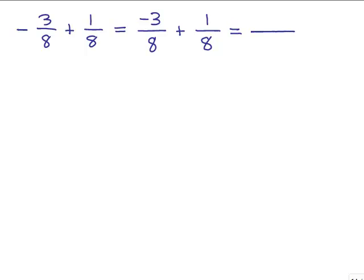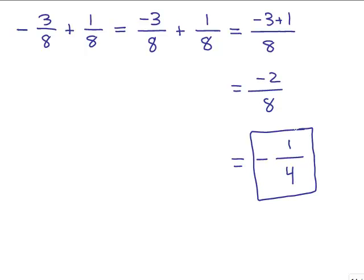Now we use the rules for adding fractions. When you have a common denominator of 8, you just write down the denominator once. It's like you've got negative 3 of these things plus 1 of these things. Negative 3 plus 1 is negative 2, so we get negative 2 eighths. There's more negatives, so the answer is negative. Then we reduce 2 eighths by dividing the numerator and denominator by 2, which gives you negative 1 fourth. You might not need to show all of these steps — a lot of this can be done in your head.